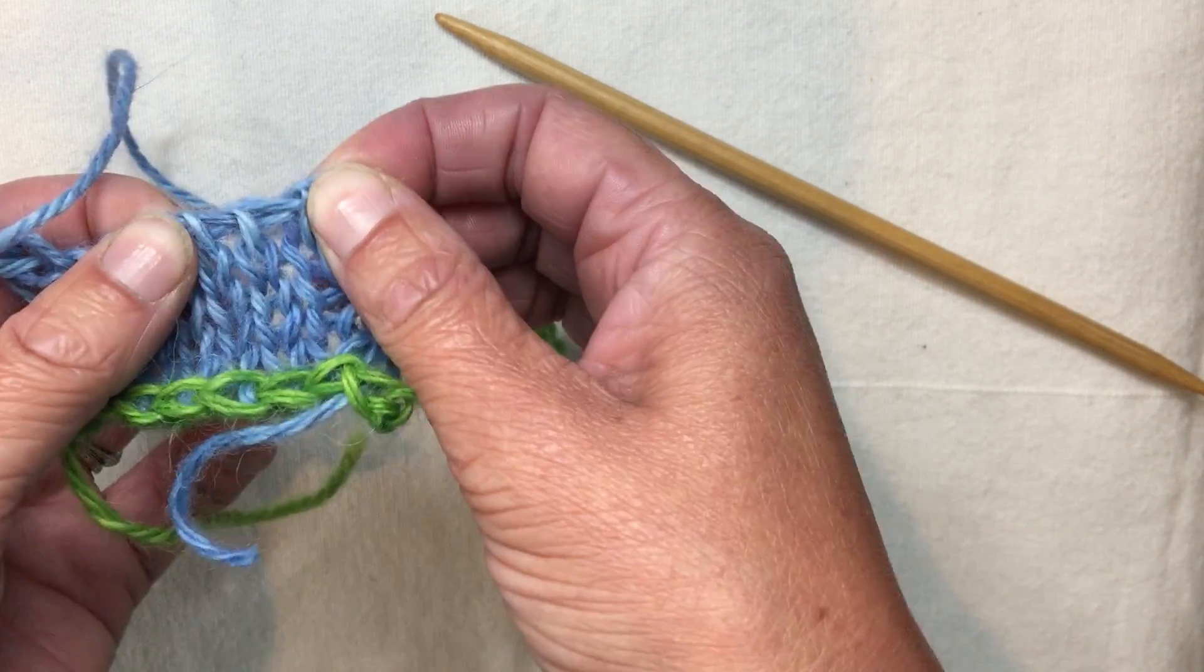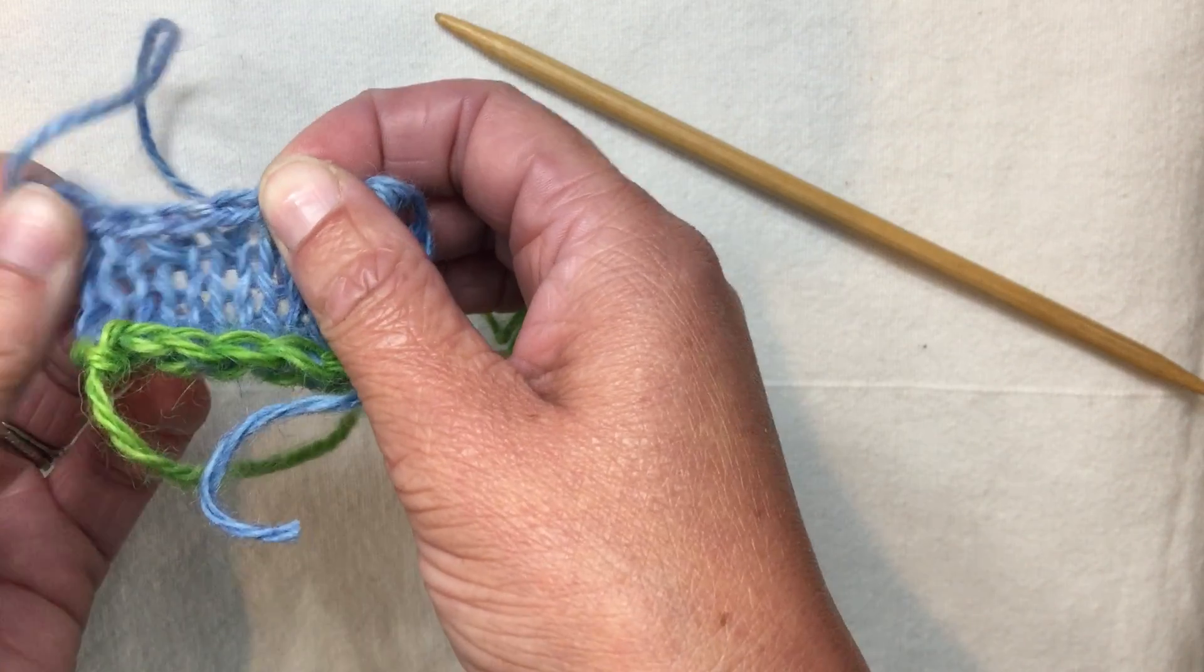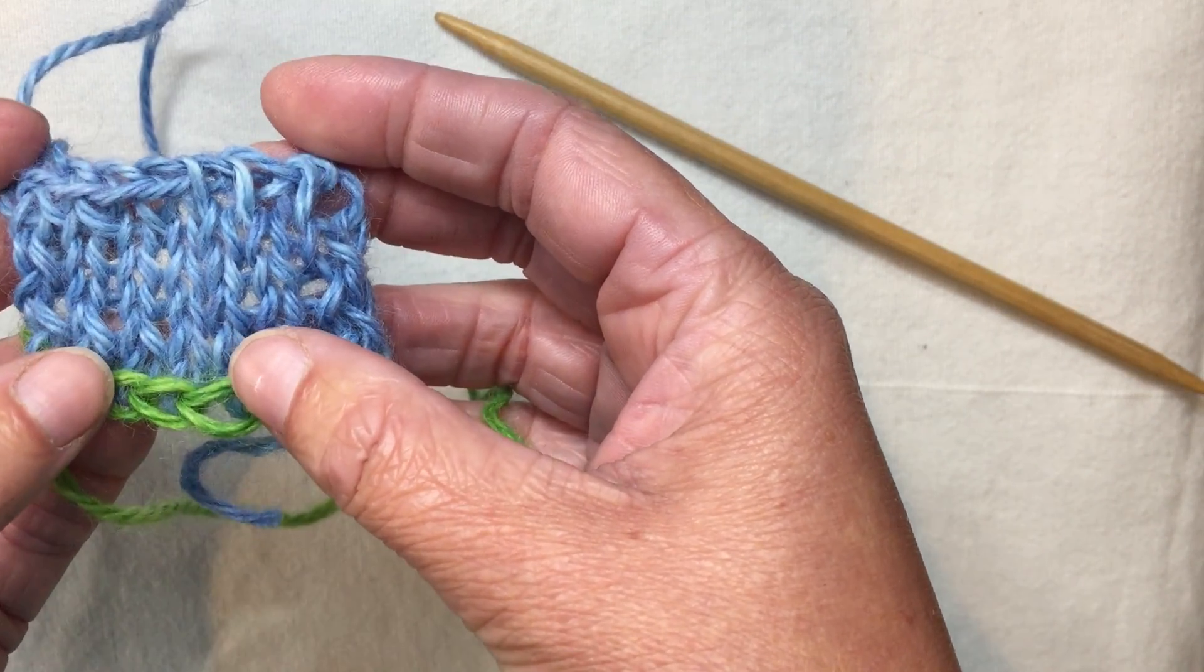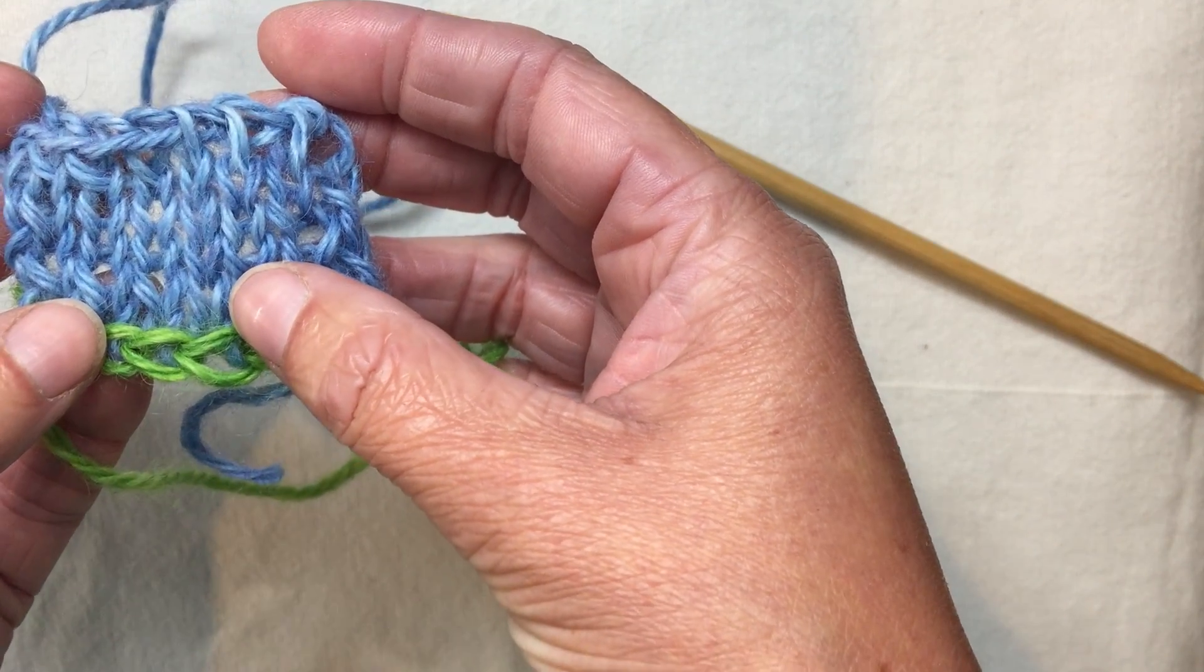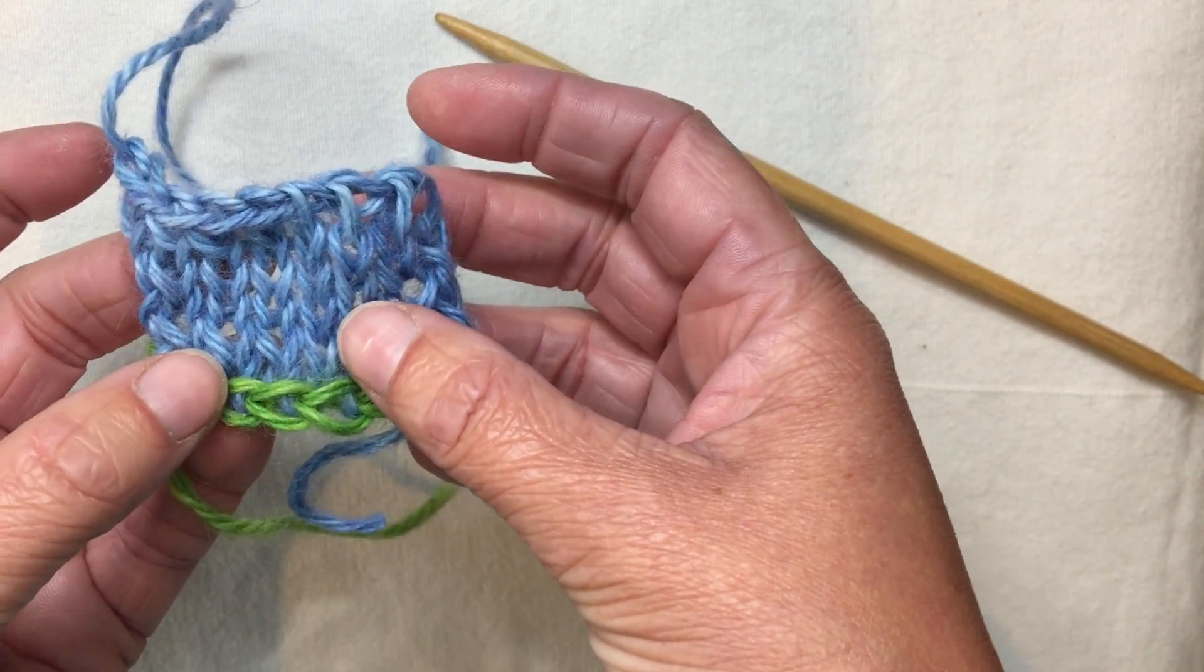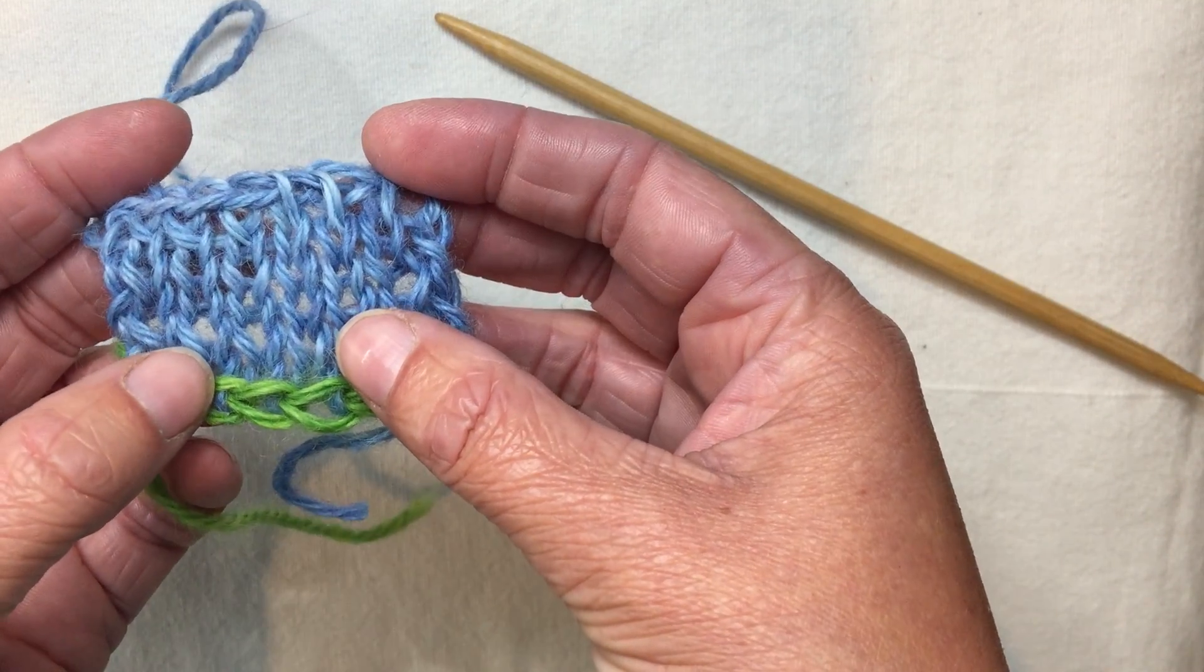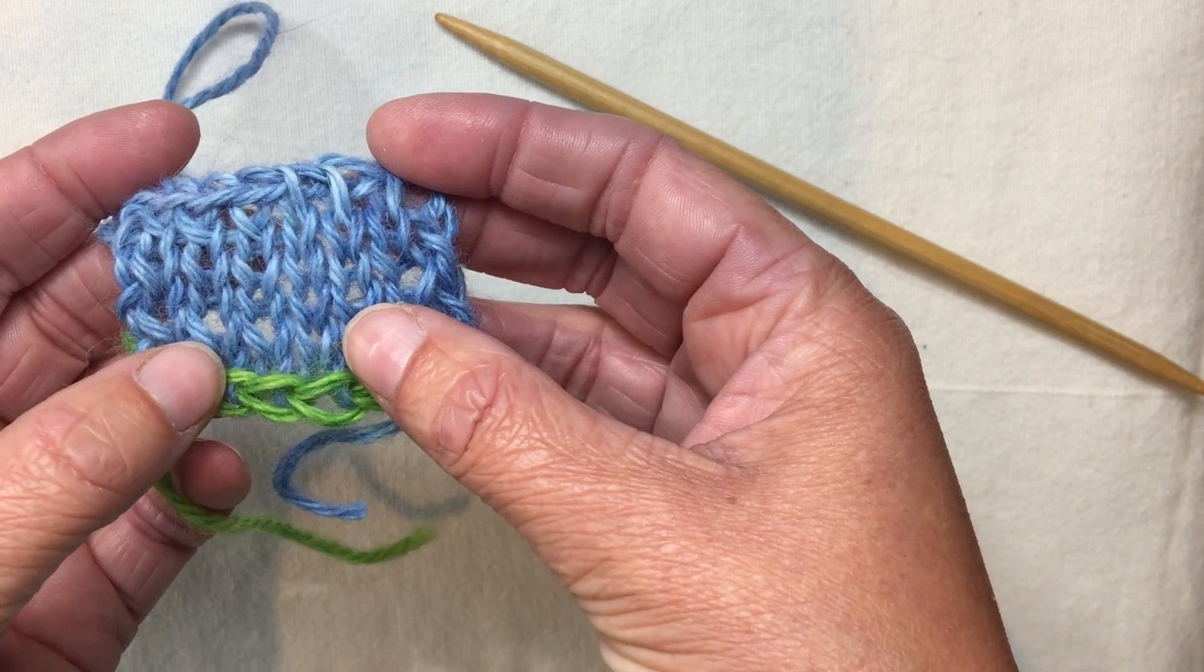You'll also find that this is not a terribly stretchy bind-off, it's quite firm. It's a variation on what's done on a knitting machine if you've ever tried that. So this is one when you want to have a firm edge, it might be a good match for a cable cast-on which is also a very firm edge at the bottom, because often we want stretchiness in the knitting but not always.